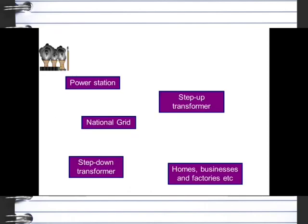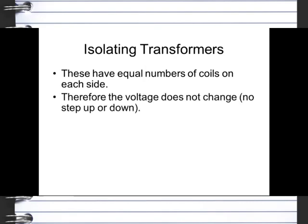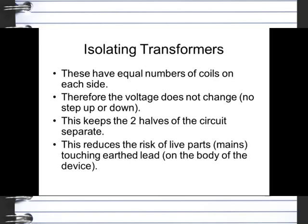Where are step-up transformers used? They're mainly used in the national grid, where you generate electricity in the power station. You go to the step-up transformer, which increases the voltage from around about 10,000 volts up to around about 100,000 volts. And then from the national grid, you go to a step-down transformer, which takes that 100,000 volts and steps it down to the 230 that we get in our home. Isolating transformers have equal number of coils on each side, so there's no change in the voltage with a step-up or a step-down. This means that you have two halves of the circuit, and they are kept separate. This reduces the risk of live parts, or the mains, touching an earth lead, and therefore affecting the body of the actual device.